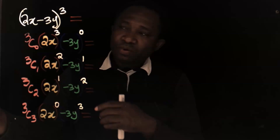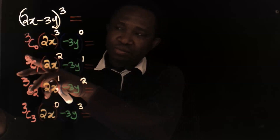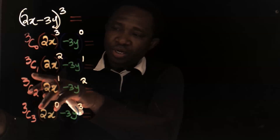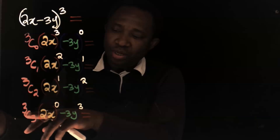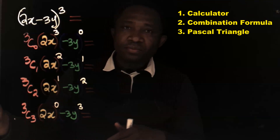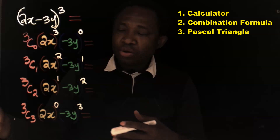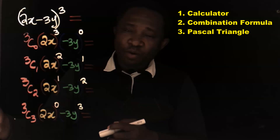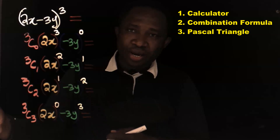Next, you are going to solve for the coefficients of each of the terms: 3C0, 3C1, 3C2, and 3C3. You can do this either using your calculator, or using the combination formula, or using Pascal's triangle.